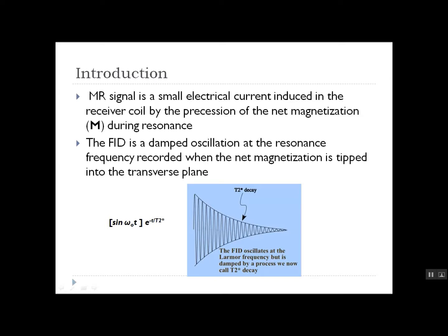To start with some basic concepts, an NMR signal is a small electrical current induced in a receiver coil by the precession of the net magnetization during resonance. The free induction decay is a damped oscillation at the resonance frequency, which is usually the Larmor frequency, recorded when the net magnetization is tipped into the transverse plane. The FID, free induction decay, is a damped sine wave of the form we can see on the slide.